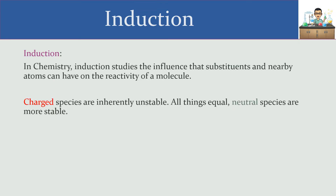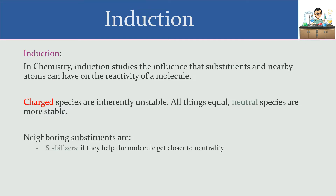The idea is that charged species are inherently unstable. Anytime you get a positive charge, it attracts a negative, and the negative attracts a positive. Neutral species, on the other hand, are a lot more stable. So neighboring substituents can be stabilizers if they help a molecule get closer to neutrality, or they can be destabilizers if they drift the molecule away from neutrality instead.